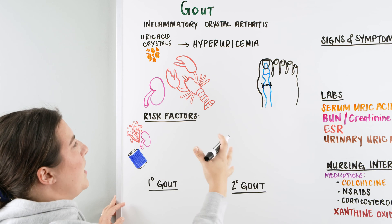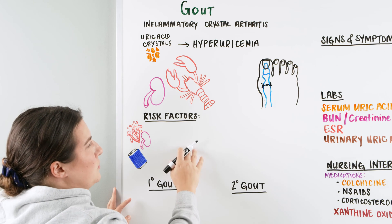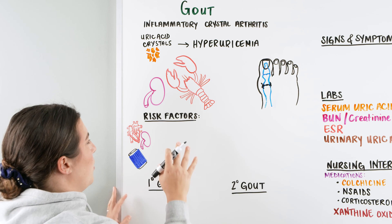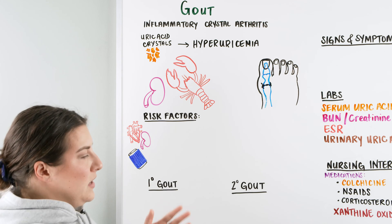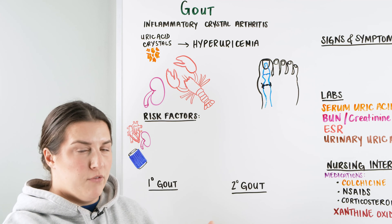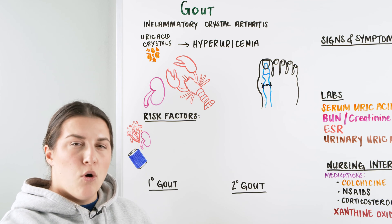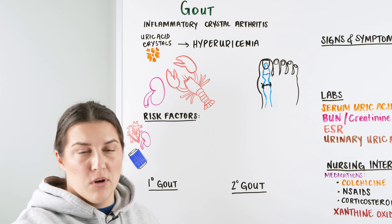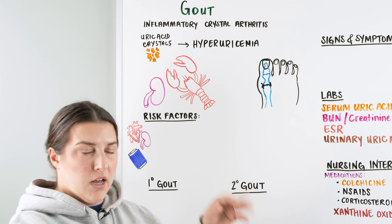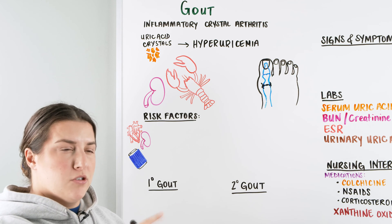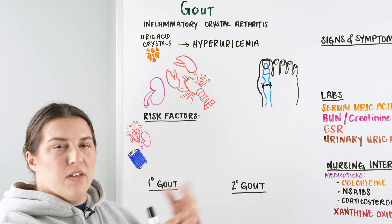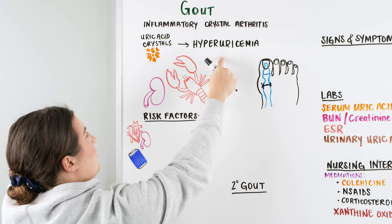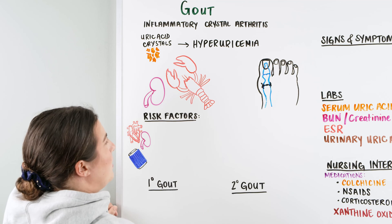Why does this occur? We have some risk factors. Some of these risk factors are causing either the production of uric acid to be really high, or the elimination of uric acid to be low. So production is really high and elimination is low, meaning we're not having a complete output of this uric acid. As it builds up and gets higher in our body, we have hyperuricemia.